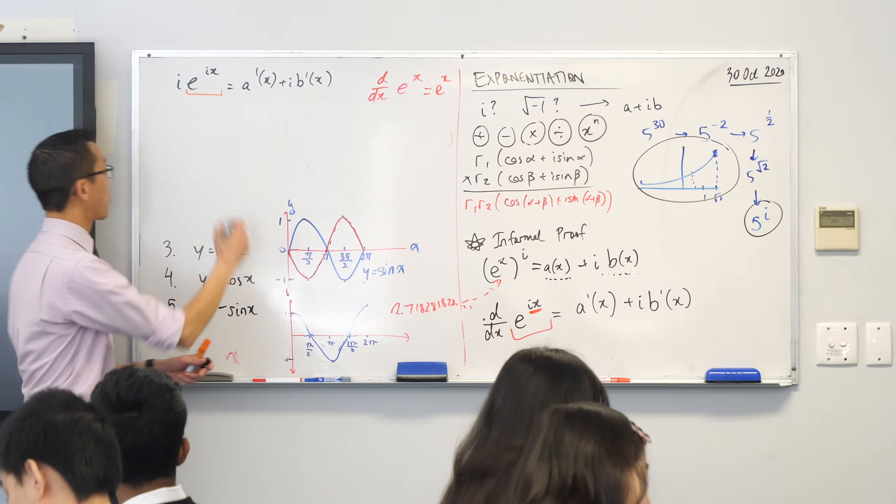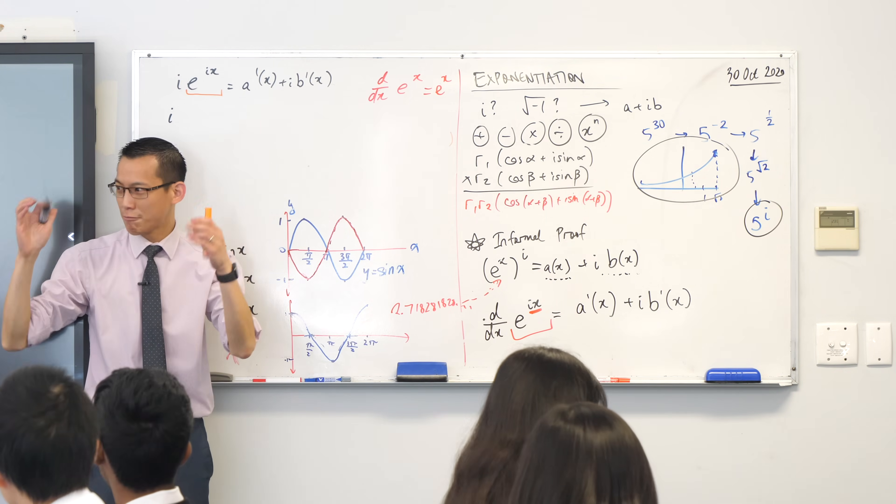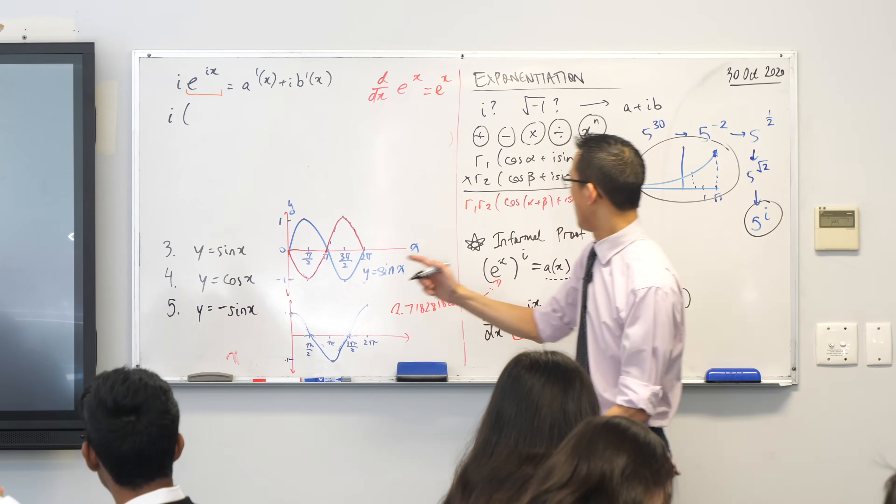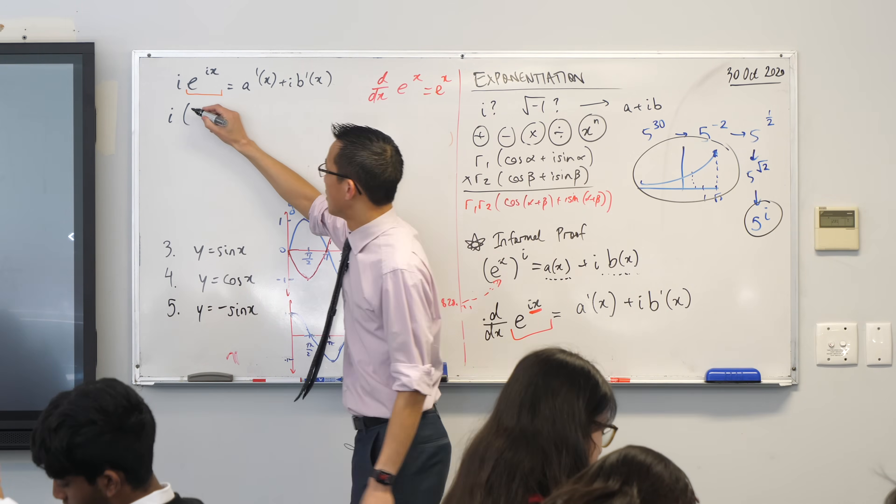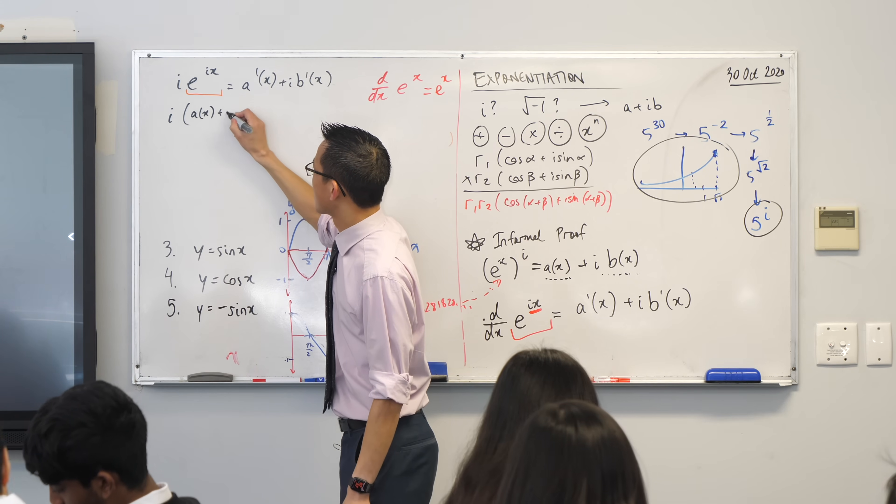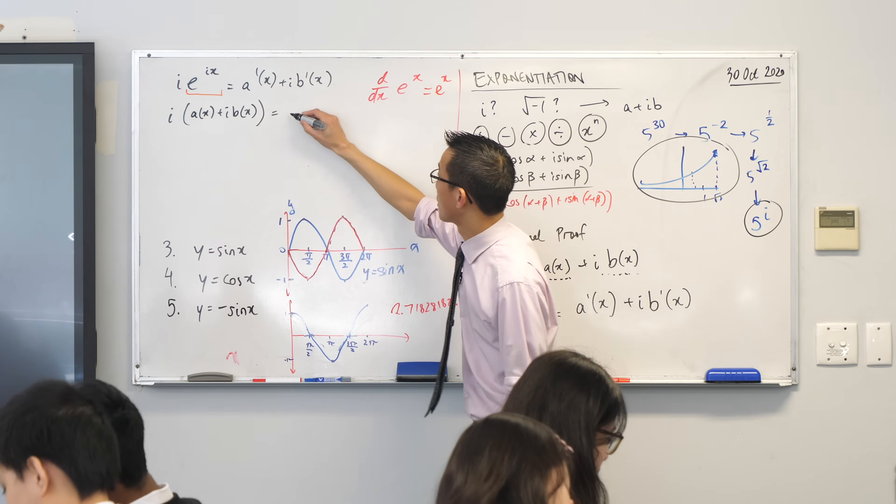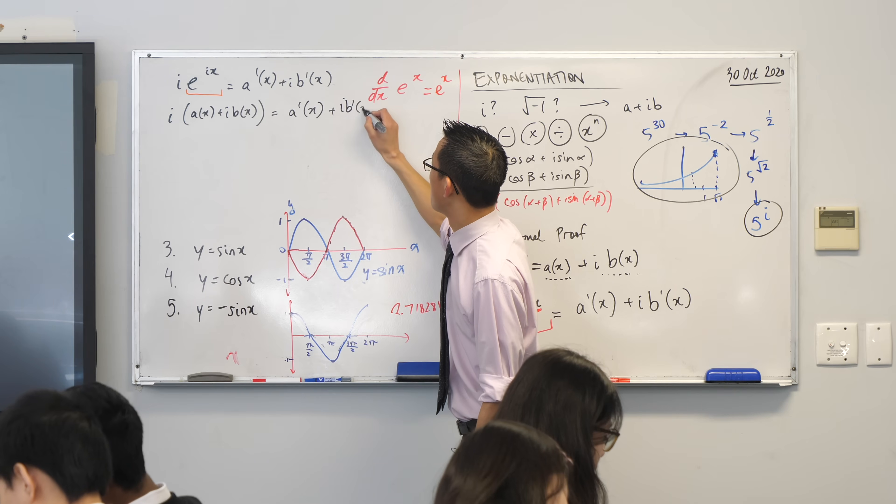So let's go ahead and do that. I've got this i hanging out the front. Some of you, the gears are turning, which I'm glad for. Let's just do the substitution. So I'm going to put in a of x plus i b of x, whatever those happen to be. There we go. There's the left-hand side. Here comes the right-hand side. a dash plus i b dash.